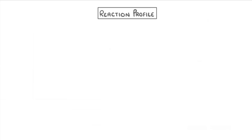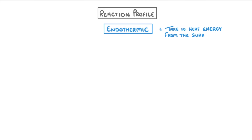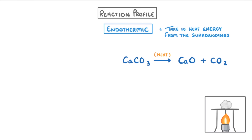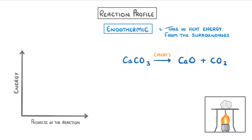The opposite of an exothermic reaction is an endothermic reaction. These are reactions which take in heat energy from the surroundings. For example, if we wanted to break down calcium carbonate into calcium oxide and carbon dioxide, we'd have to supply heat, perhaps by using a Bunsen burner to heat up the solid calcium carbonate. So if we wanted to draw a reaction profile for this reaction, our reactants would be on the left and the products on the right, but this time the products would be higher up, because they have more energy than the reactants — and so we'd label this difference as the energy absorbed, rather than the energy released.